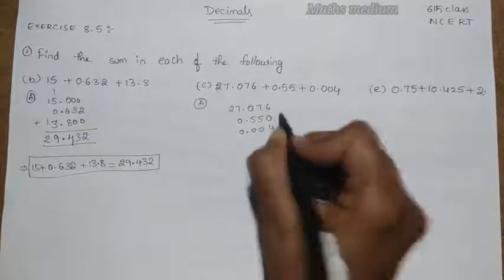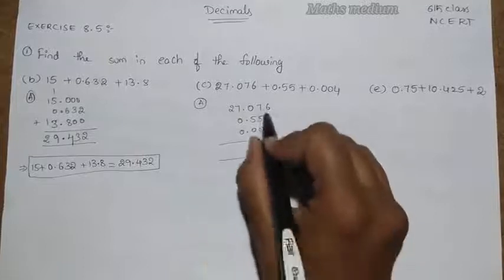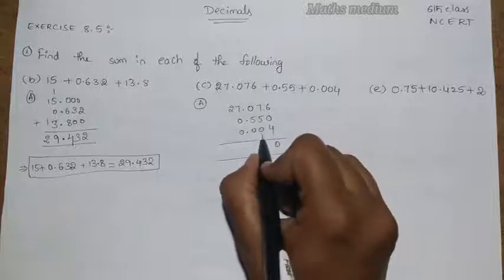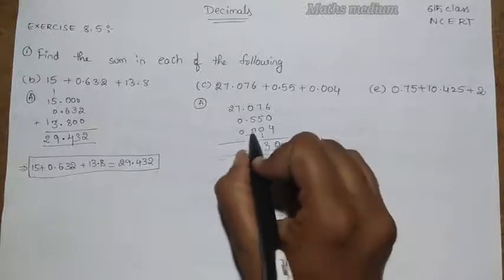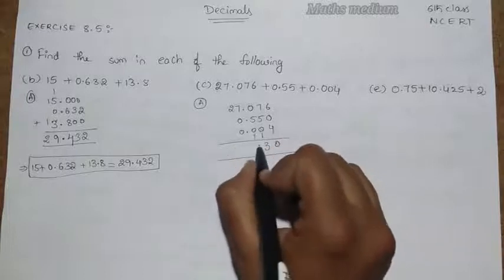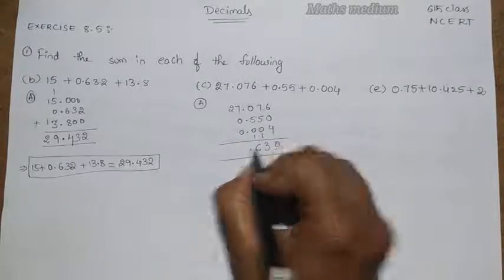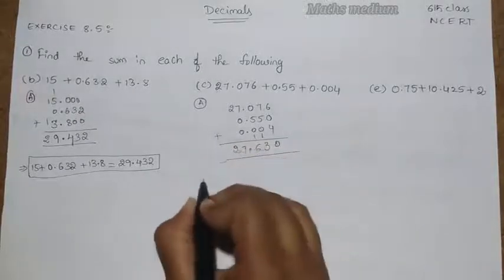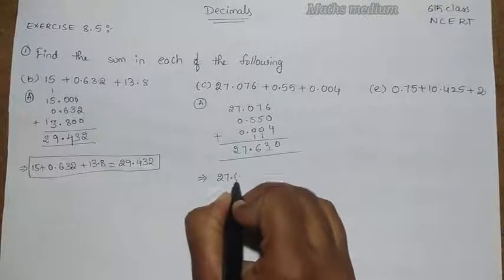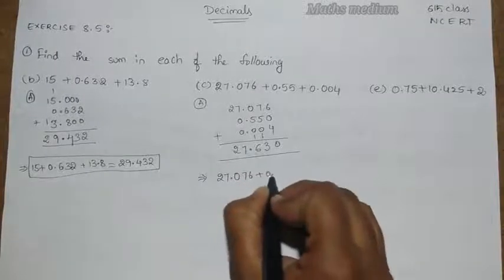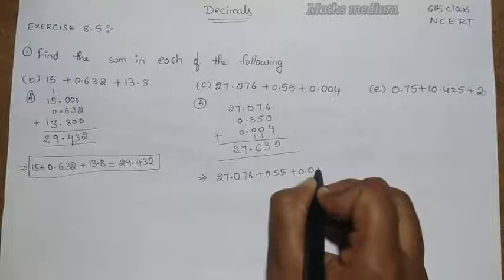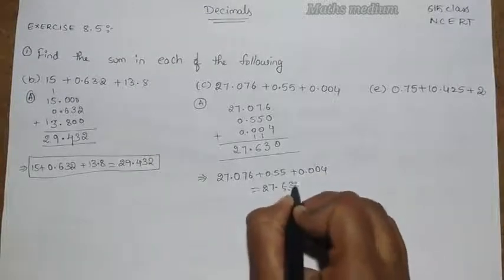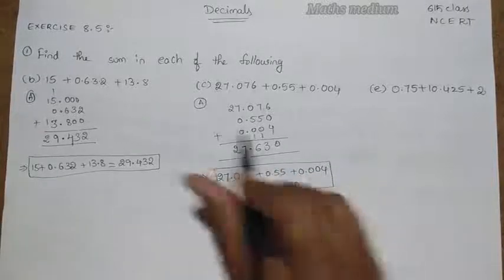If you're confused, make it as a 0 also. 6 plus 4 is 10, 7 plus 5 is 12, this is 13. Here 3 and carry is here. 5 plus 1 is 6. Put a decimal in the middle. Here 7, 2. 27.630 is the answer. So 27.076 plus 0.55 plus 0.004 is equal to 27.630. This is the answer for the given question number c.